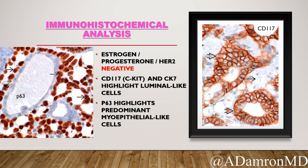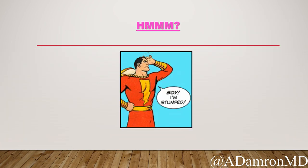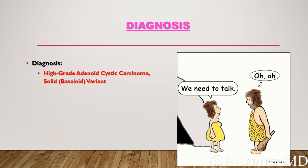CK7 and p63 would show a dual population of cells, and in fact that's what this case showed: a predominance of myoepithelial cells highlighted by p63, with scattered CK7-positive luminal-like cells as well. CD117 (c-kit) also stained the luminal-like cells. Keep in mind that c-kit positivity, while associated with where we're heading diagnostically, can also be seen in basaloid phenotype triple-negative breast tumors - so it's not a definitive standalone stain. This is interesting, and I'm leading you down the path of an adenoid cystic carcinoma - and indeed that's what we ended up diagnosing this case as: a high-grade adenoid cystic carcinoma, solid or basaloid variant.